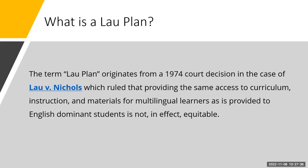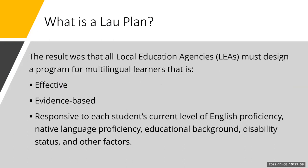The term Lau Plan originates from a 1974 court decision in the case of Lau versus Nichols, which ruled that providing the same access to curriculum, instruction, and materials for multilingual learners as is provided to English dominant students is not, in fact, equitable. The result of this decision was that all local educational agencies, or LEAs, must design a program for multilingual learners that is effective, evidence-based, and responsive to each student's current level of English proficiency, native language proficiency, educational background, disability status, and other factors.